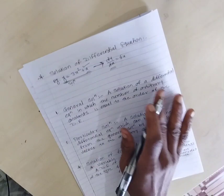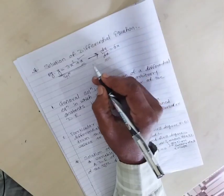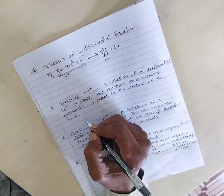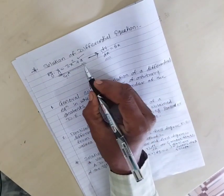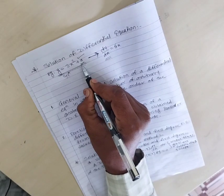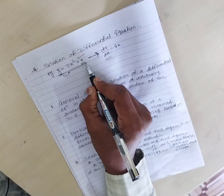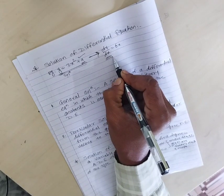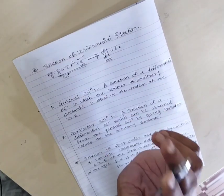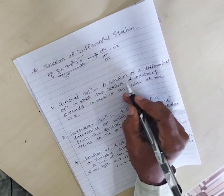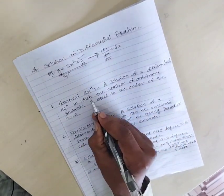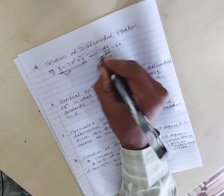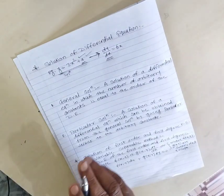The solution of a differential equation is of two types. The first type is the general solution. The general solution is defined as a solution where the number of arbitrary constants is equal to the order of the differential equation.